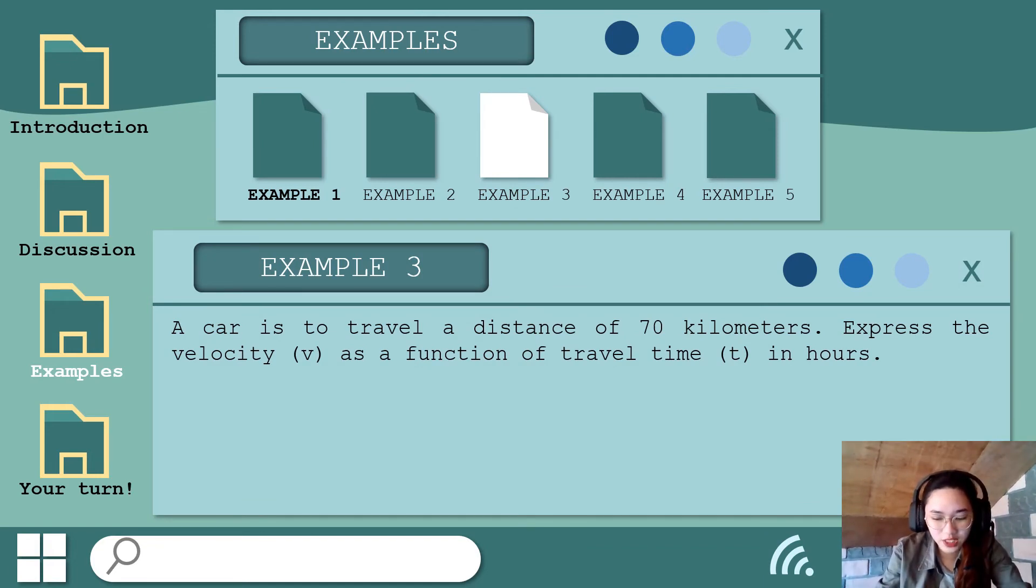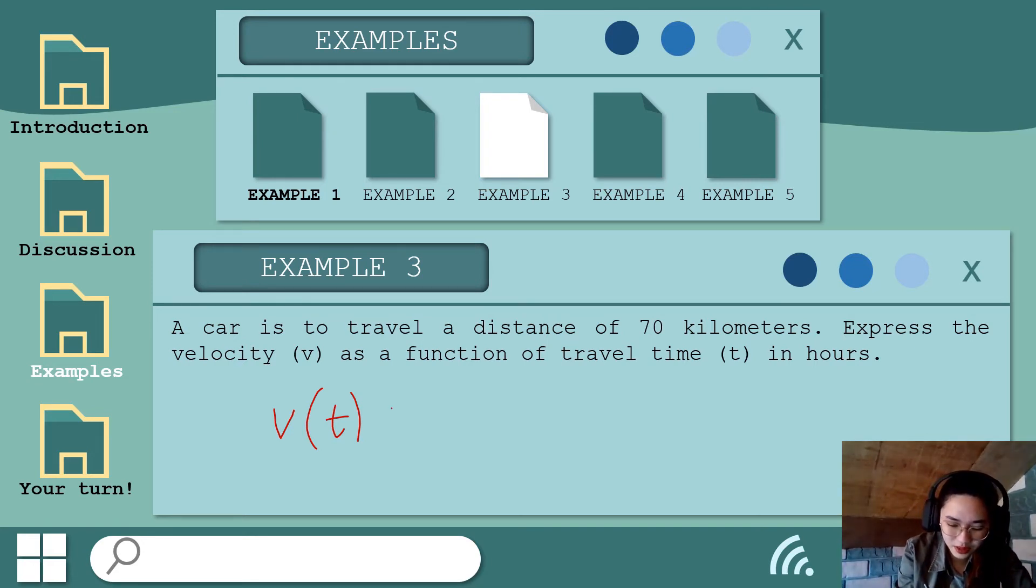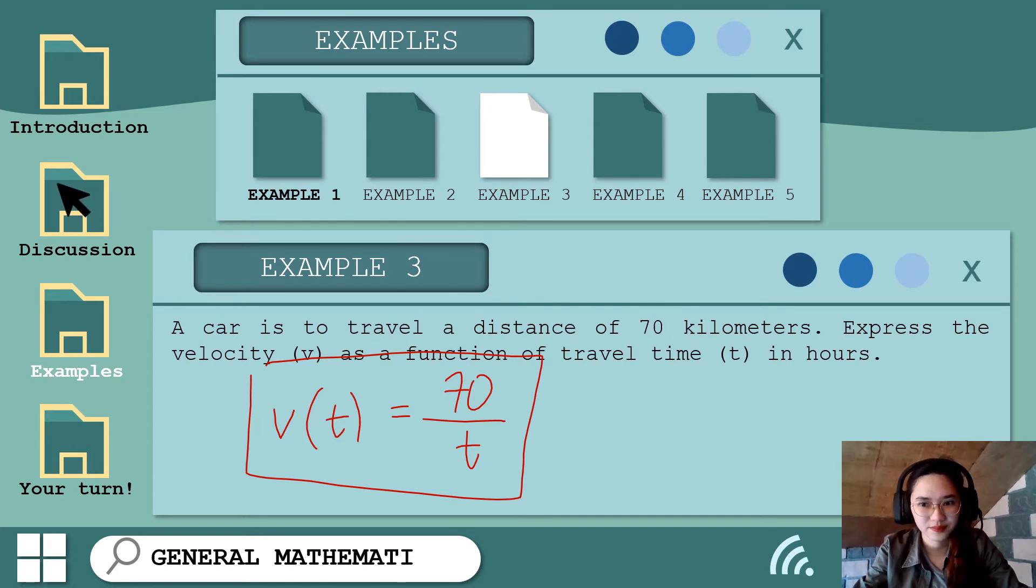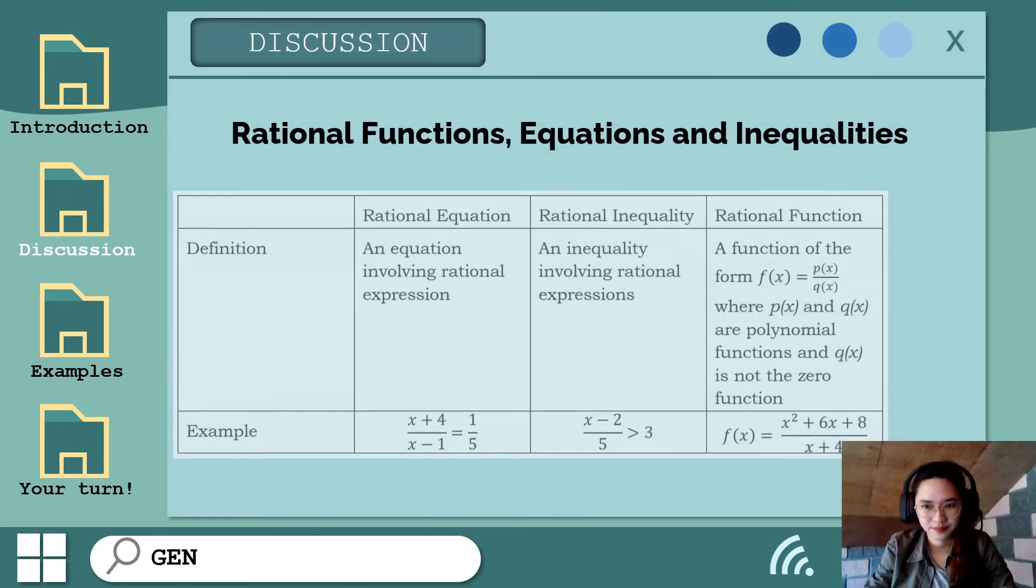Let's proceed sa ating example number 3. A car is to travel a distance of 70 kilometers. Let's express the velocity v as a function of travel time t in hours. Ngayon, kung maaalala ninyo po yung formula ng velocity sa ating science, that is distance over time. Ngayon, sa problem na ito, we have a given situation na yung distance po is 70 kilometers. So ibig sabihin, ang velocity in terms of time natin is 70 over t. Ngayon, t is the time traveled in hours. So ito na po yung ating function, velocity.